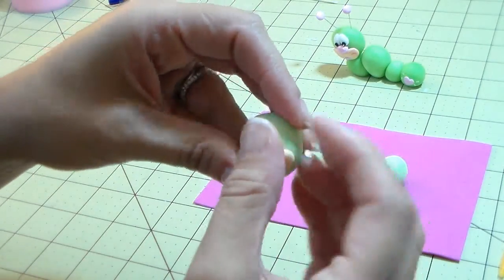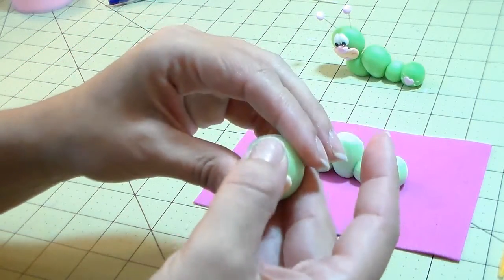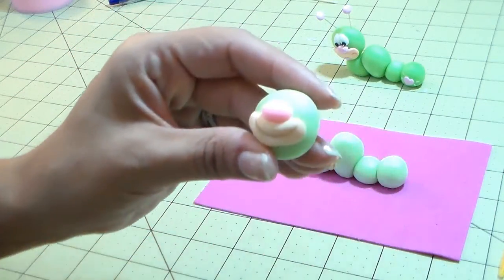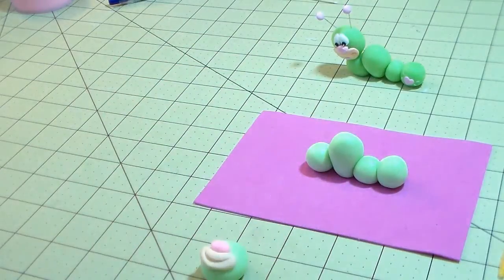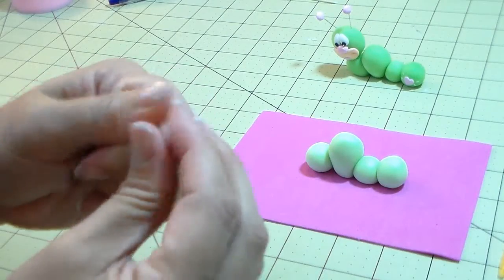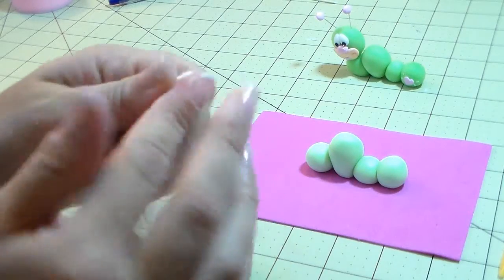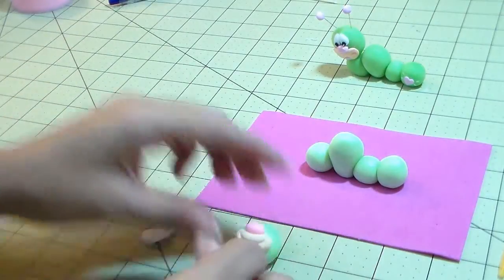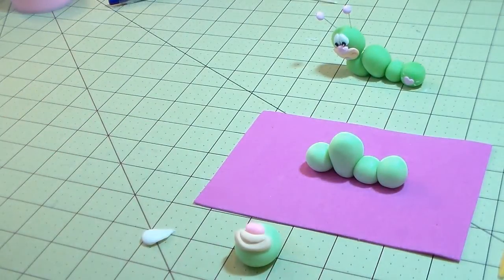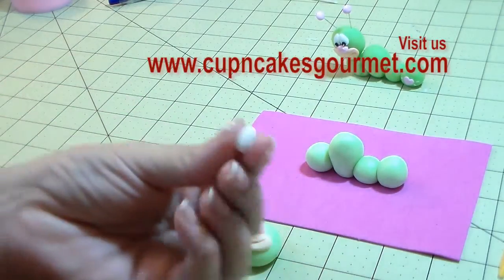I made a little pink ball for the nose and I place it right on the top of the mouth right there. Now I'm gonna make the eyes. We're gonna make two small balls with the white.